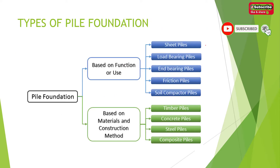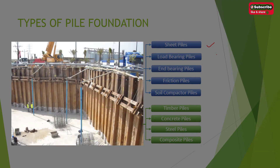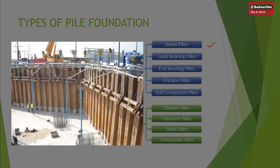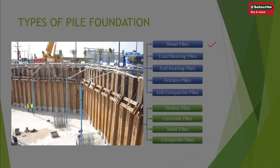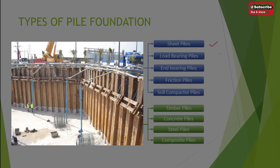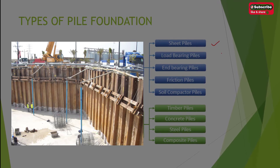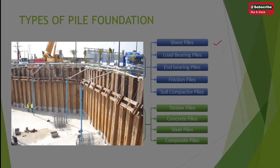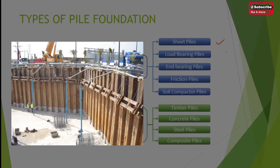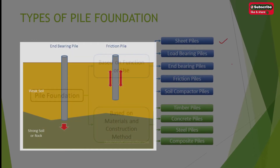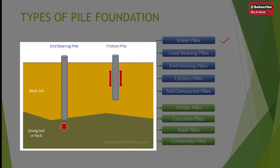Based on function or use, there are sheet piles, load bearing piles, end bearing piles, friction piles, and soil compactor piles. Sheet piles act as barriers and are used for supporting against lateral pressures only. In bridge construction, sheet piles are placed, dewatering is done, and then columns are constructed.